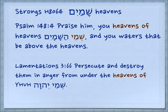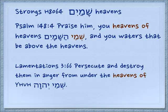So we come into a peculiar situation when we are talking about the construct. In Hebrew it's called the smichut, and this is how possession is formulated. Looking at the heavens of the heavens — Psalm 148:4: Praise him, you heavens of heavens. That's shemay — the construct form, missing the final mem. Hashemayim — the heaven of heavens — and you waters that be above the heavens. Another example is Lamentations 3:66: Persecute and destroy them in anger from under the heavens — shemay — of Yehovah. We see the construct form attached to the name of the Lord.